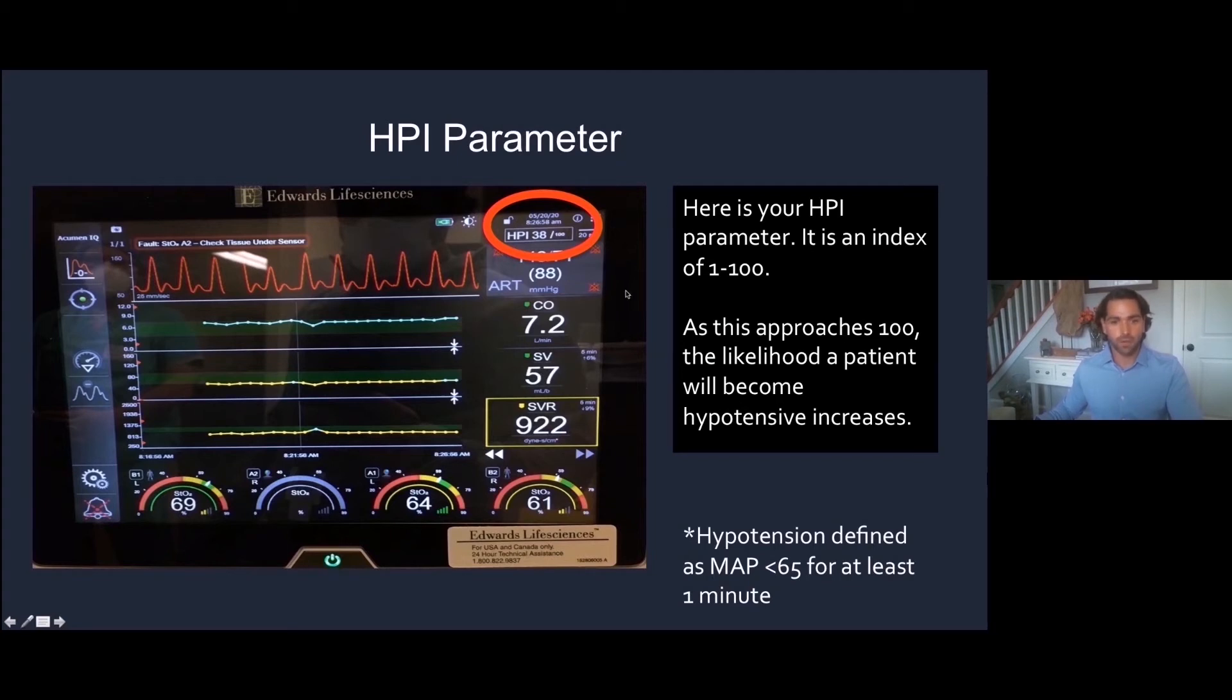For discussion purposes, we're going to define hypotension as a MAP less than 65 for one minute.